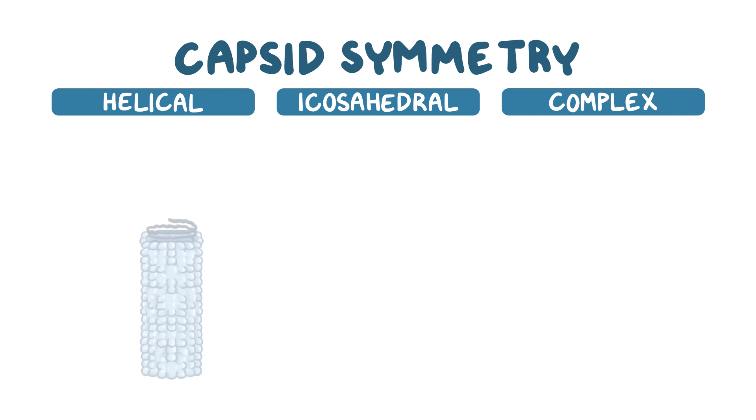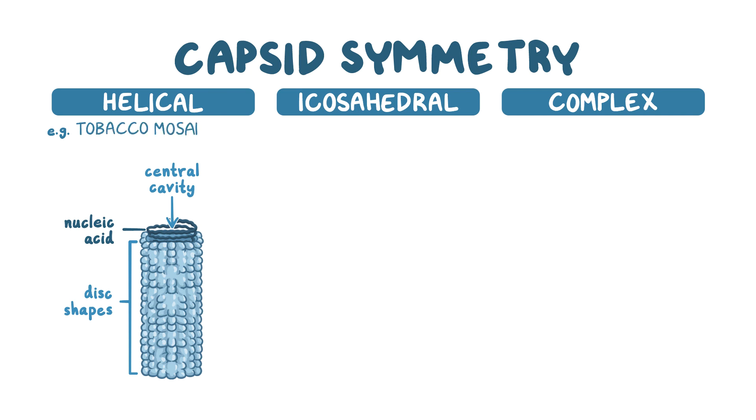The helical viruses have a capsid with a central cavity or a hollow tube, which is made by proteins arranged in a circular fashion, creating a disc-like shape. The disc shapes are attached helically, creating a tube with room for the nucleic acid in the middle. An example of a virus with helical symmetry is the tobacco mosaic virus, which is a most studied example.